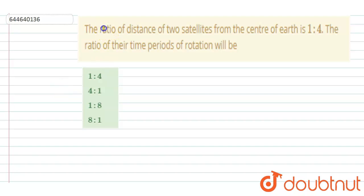Hello Rupan, the ratio of distance of two satellites from the center of the earth is 1 is to 4. The ratio of their time periods of rotation will be.